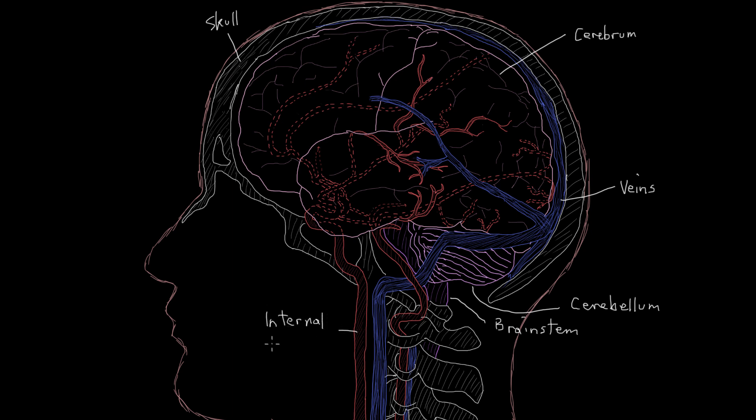Remember, we're only looking at the left side here, so we can only see the left one. And here, running up inside the vertebrae, we have the vertebral artery.